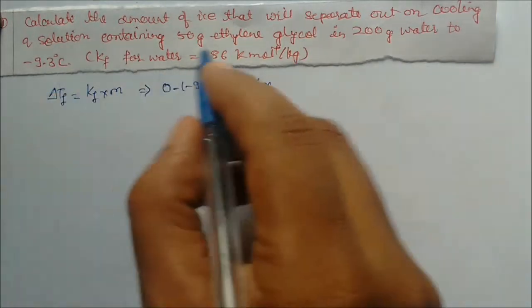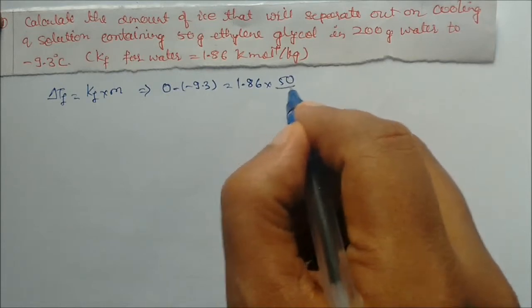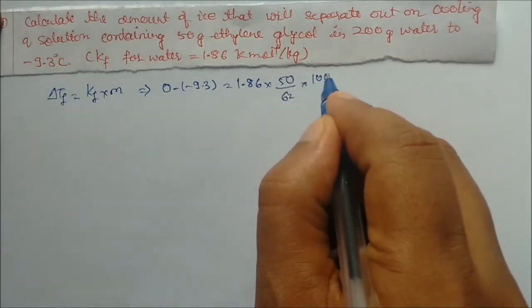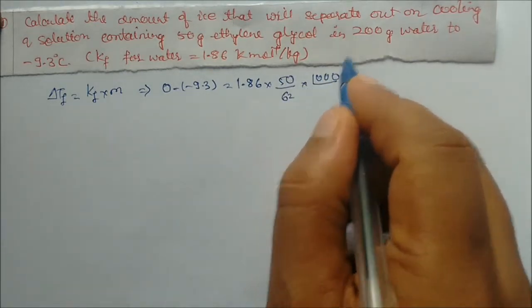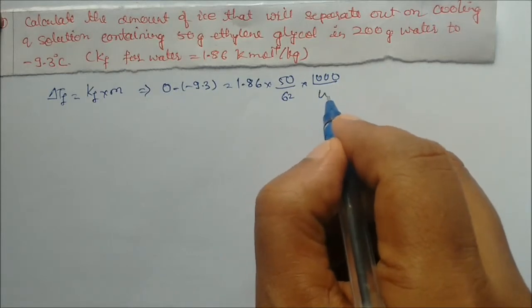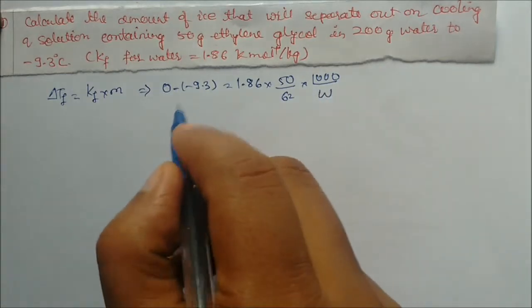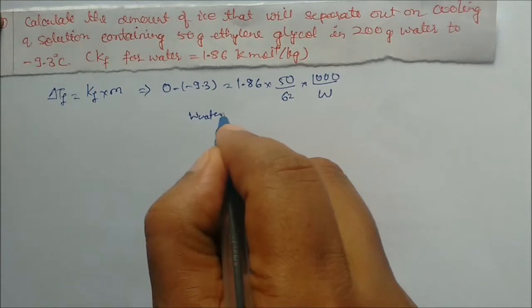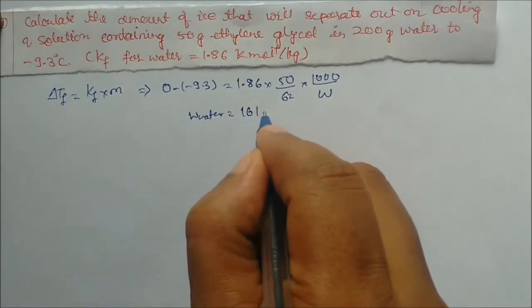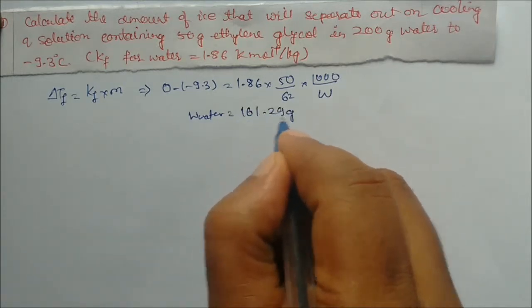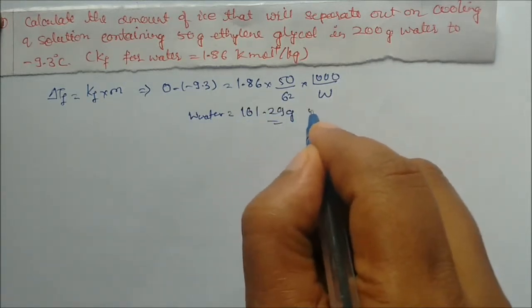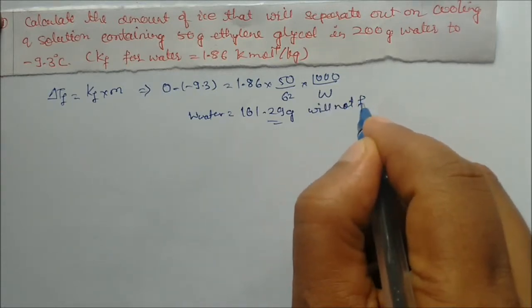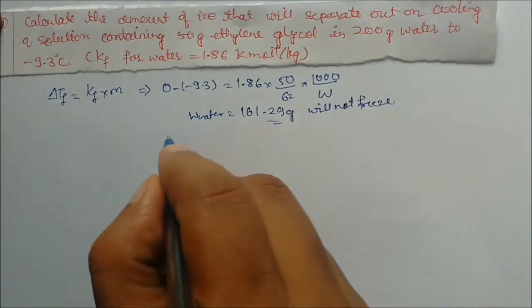The weight of ethylene glycol is 50 grams and its molar mass is 62. The weight of the solvent is unknown. On solving, we get the weight of unfrozen water as 161.29 grams. This portion will not freeze.